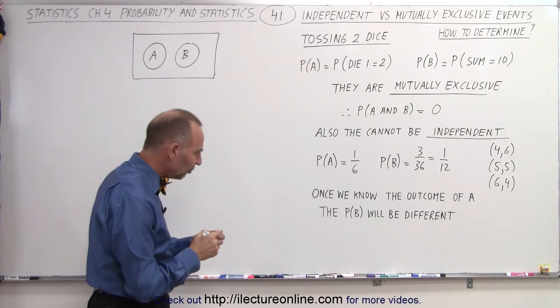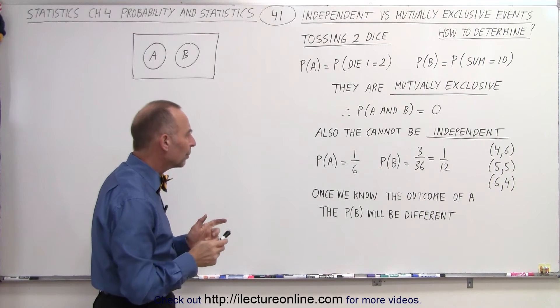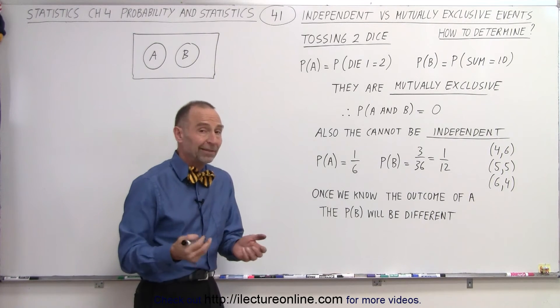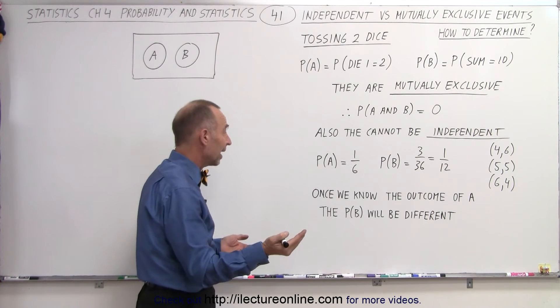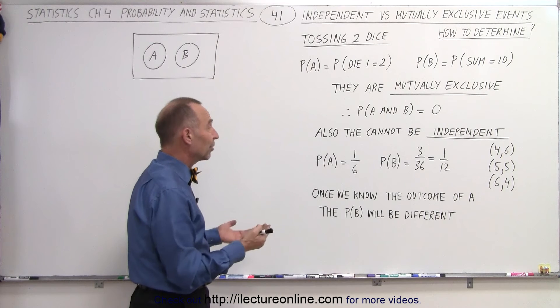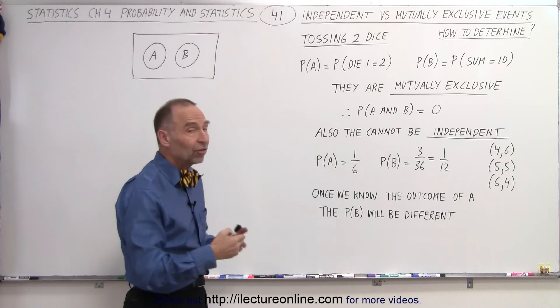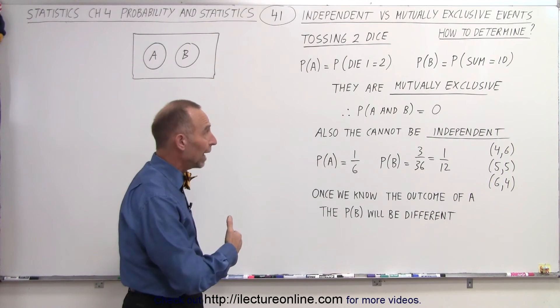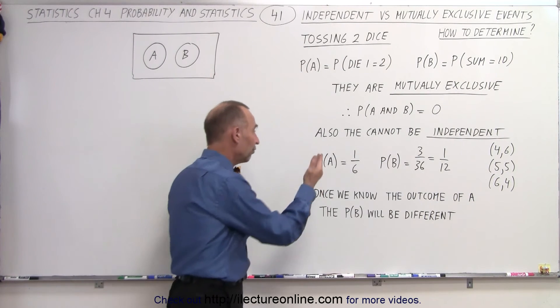So that means that once we know the outcome of A, the probability of B will be different. For example, let's say we toss dice and die A comes out to be a 5. Then there's a 1 out of 6 possibility that both of them together will have a sum of 10. Or if we throw a 4,